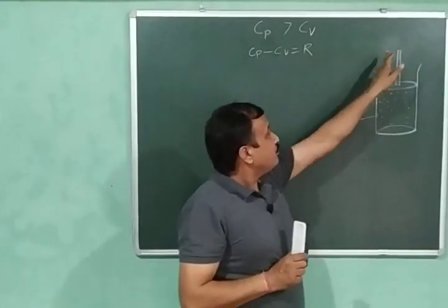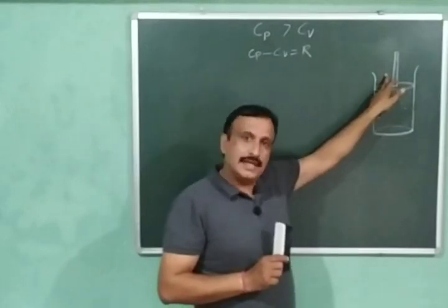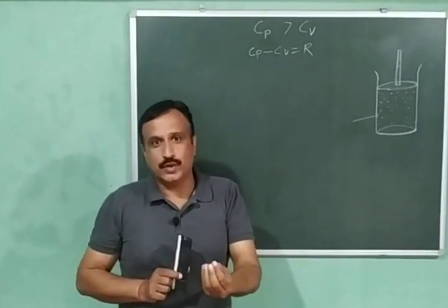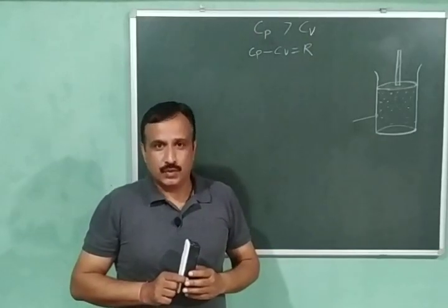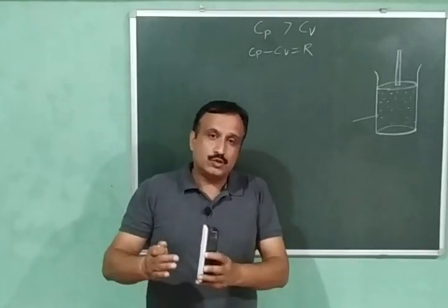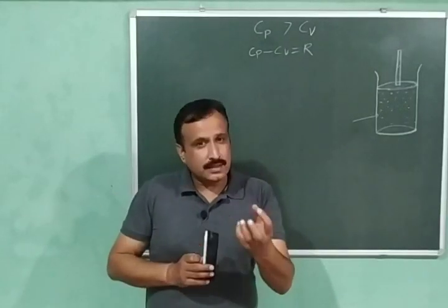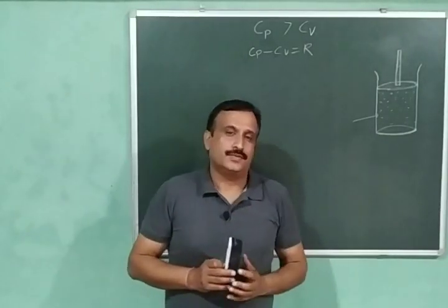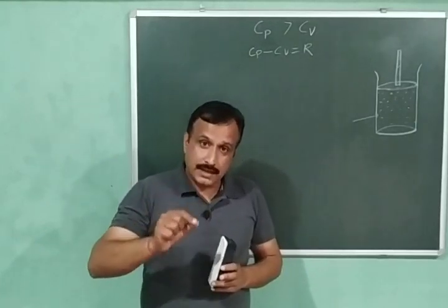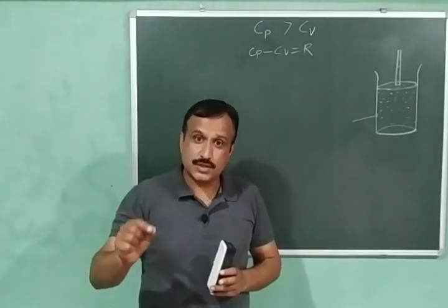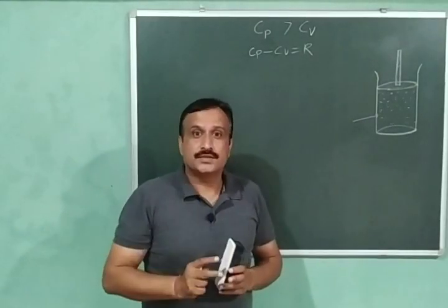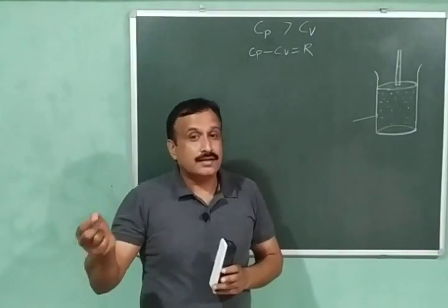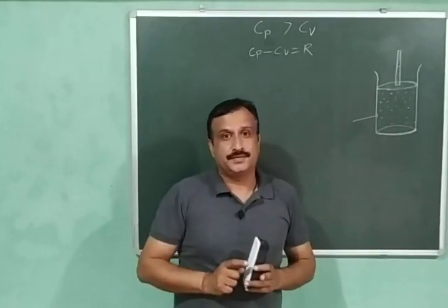Now, if we are not going to change the pressure — pressure is held constant — and heat is given to the system, then certainly the system will do work and the gas will expand. So when heat is supplied to the system at constant volume, that heat is used only to increase the internal energy. But when heat is added to the system at constant pressure, that heat is utilized in two ways: some part increases the internal energy and the other part is used to do work.